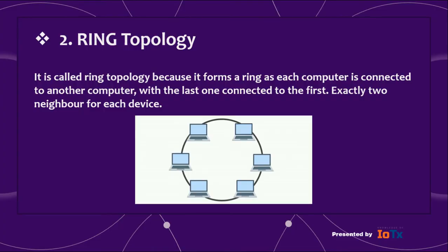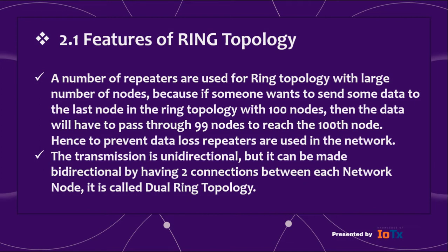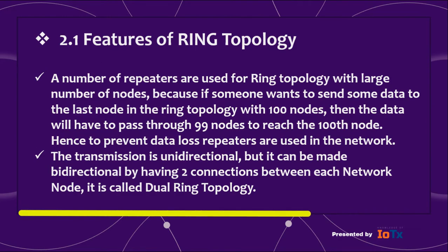Number two: ring topology. It is called ring topology because it forms a ring — each computer is connected to another computer, with the last one connected to the first, giving exactly two neighbors for each device. A number of repeaters are used for ring topology with a large number of nodes. For example, data sent to the 100th node must pass through 99 nodes, so repeaters prevent data loss. Transmission is unidirectional but can be made bidirectional by having two connections between each node — this is called dual ring topology.